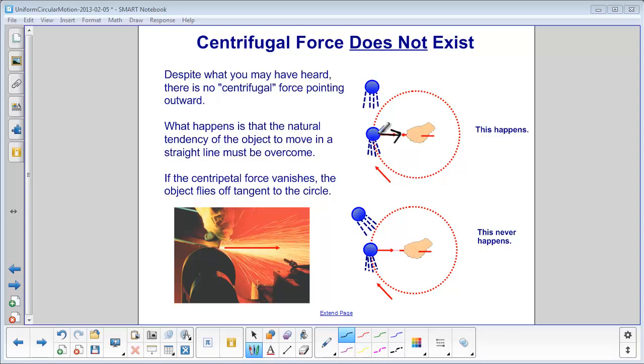Remember from dynamics that objects want to maintain a constant speed and direction, unless a force acts on them. So, this ball wants to move upwards, but the string is pulling it in. So, it feels like there is a force outward, but there is not.